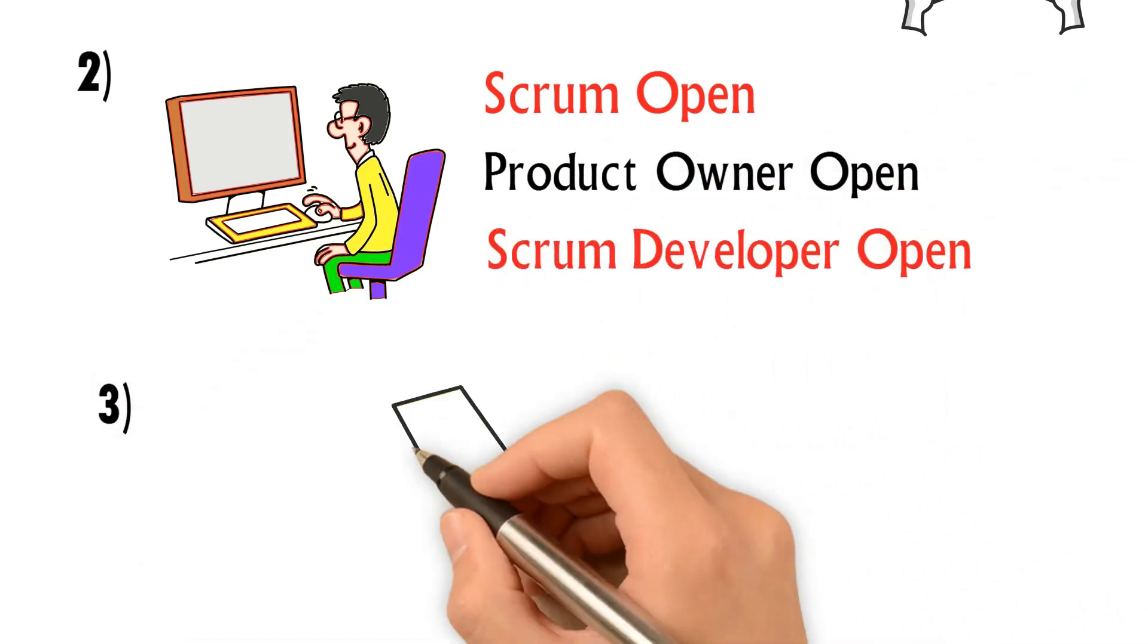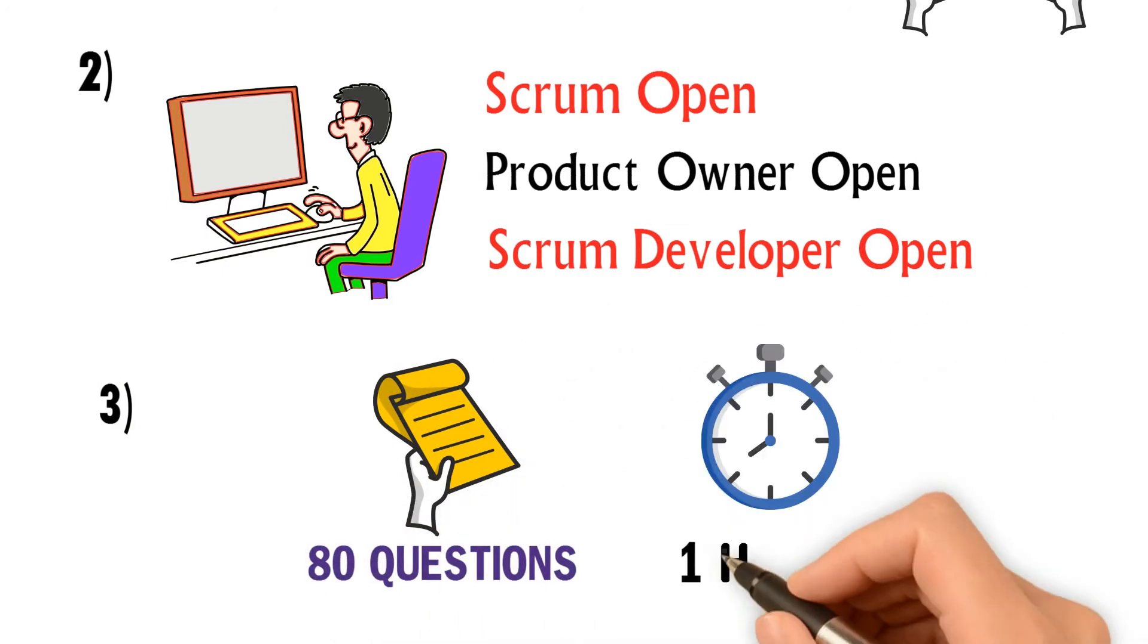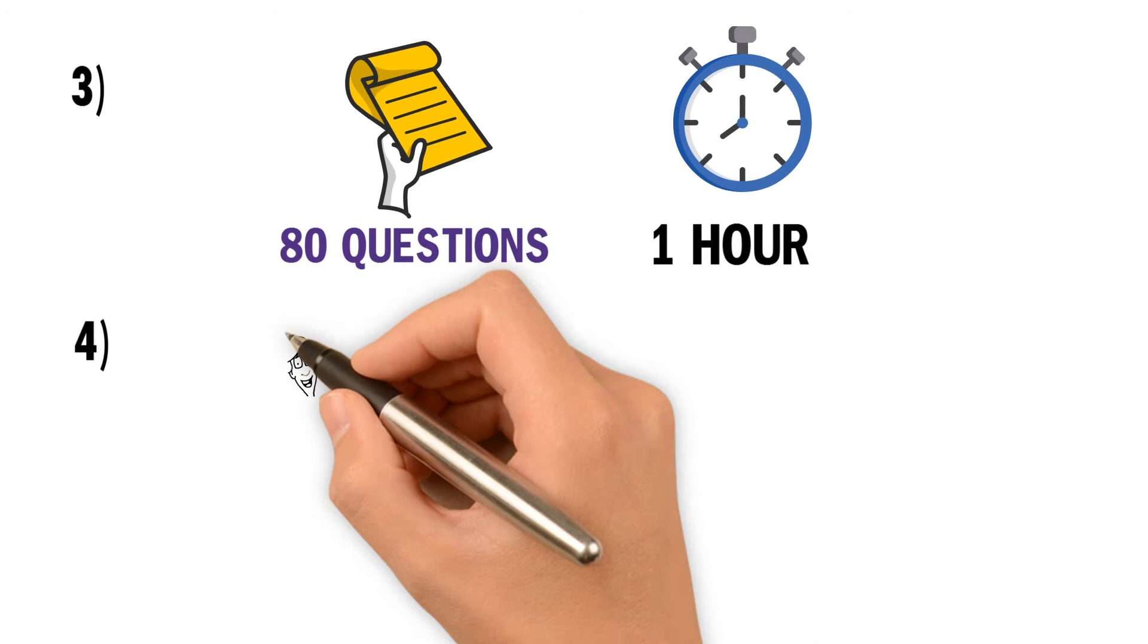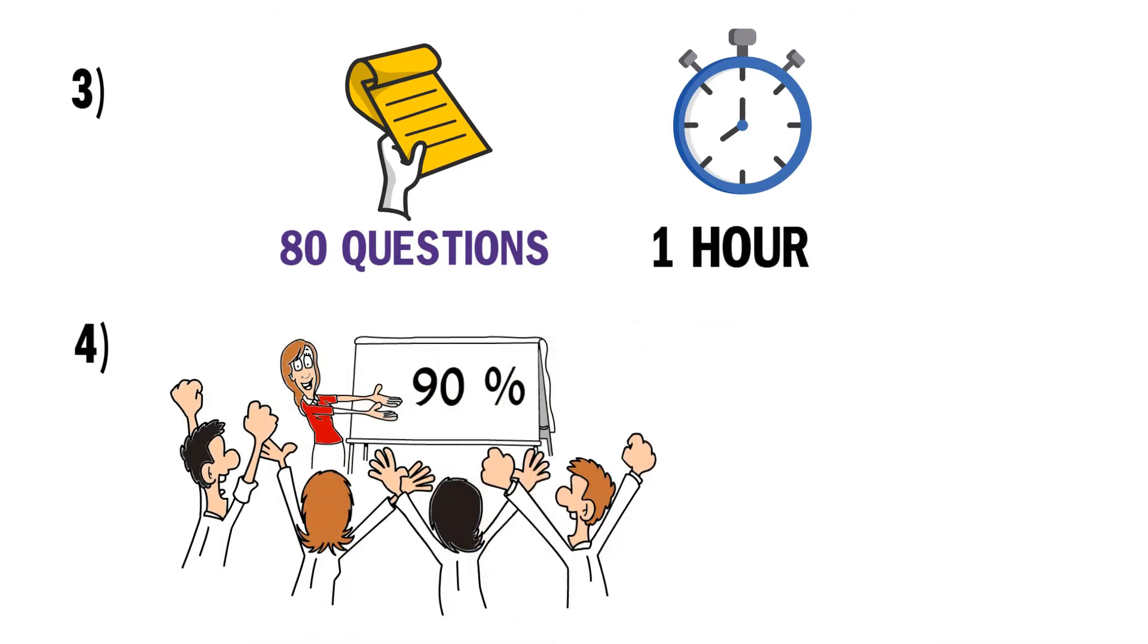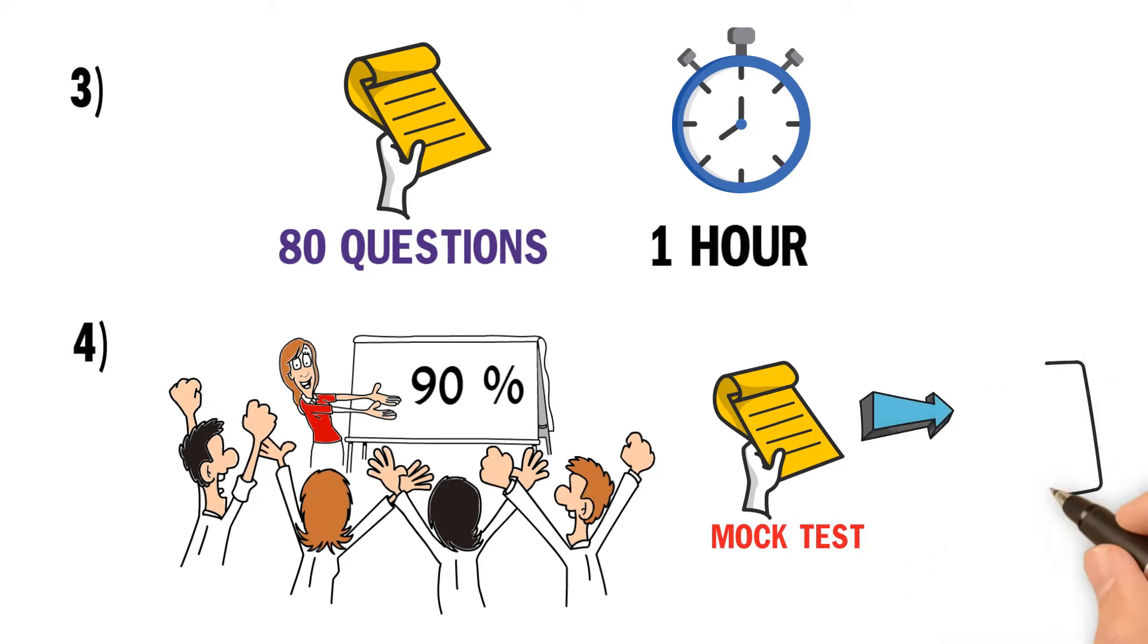You need to complete 80 questions in an hour for each mock exam. You should score at least 90% for each mock exam to feel comfortable to take a real PSM 1 exam.